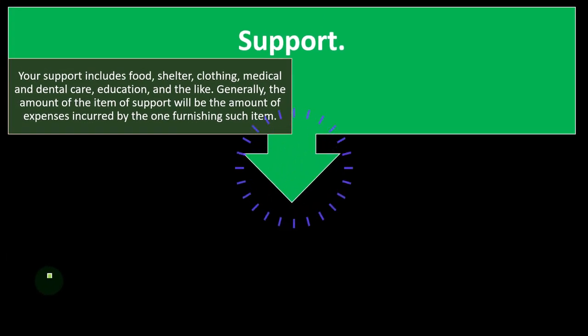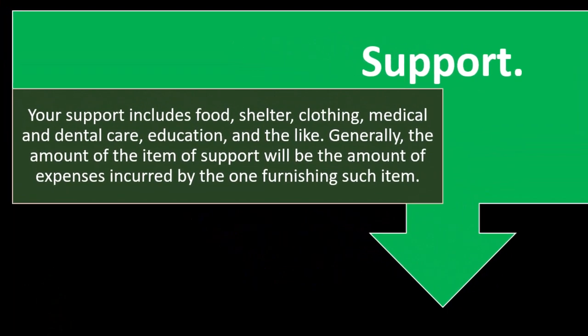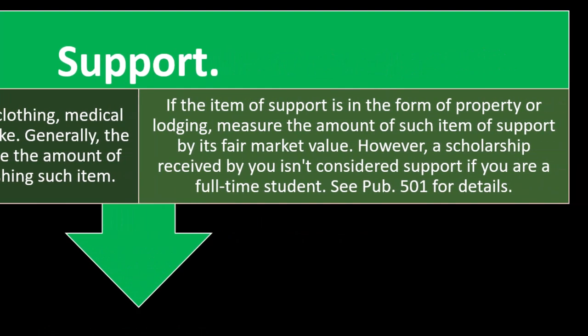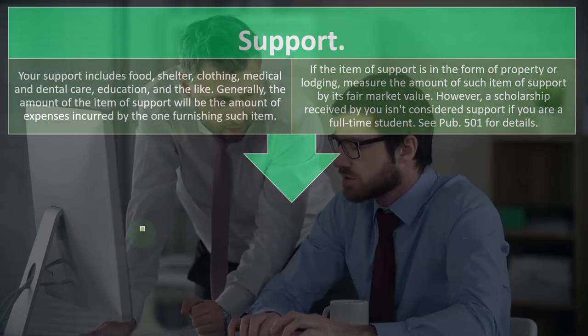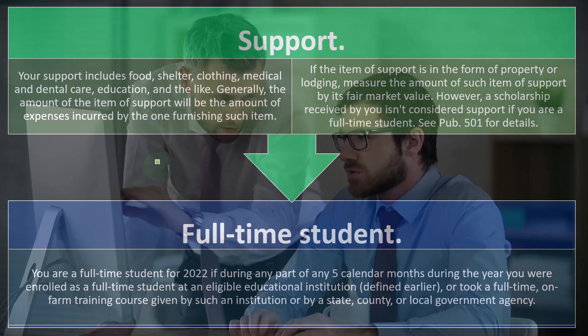Earned income doesn't include compensation that represents a distribution of earnings or profits rather than a reasonable allowance for personal services. If you are a sole proprietor or partner in a trade or business where both personal services and capital are material income-producing factors, earned income includes a reasonable allowance for compensation but not more than 30% of your share of net profits after the deduction for one-half of self-employment tax. Support includes food, shelter, clothing, medical and dental care, and education — measured at fair market value for property or lodging.